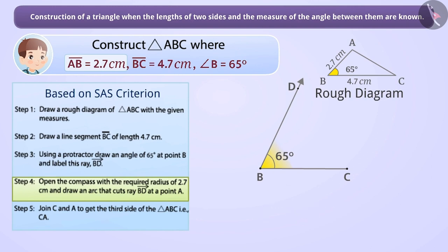With B as the center, draw an arc on ray BD of radius 2.7 cm. The arc cuts ray BD at a point. This point of intersection is the vertex A of triangle ABC.